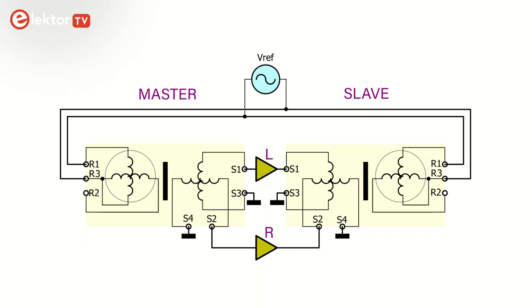The sine and cosine outputs of the master resolver are connected to the left and right channels of the audio amplifier, while the amp's loudspeaker outputs drive the sine and cosine windings of the slave resolver. The reference signal is connected to both resolvers, but highly attenuated for the master to avoid overdriving the amplifier.